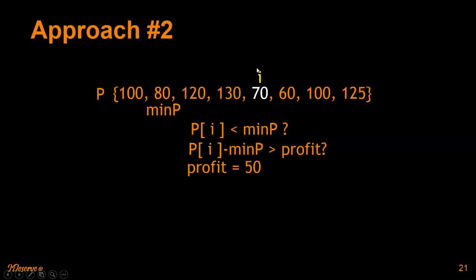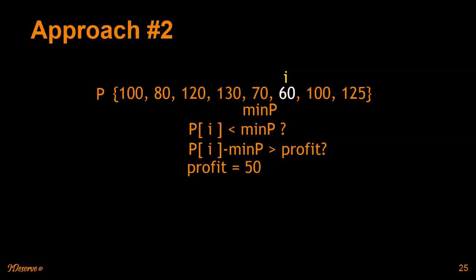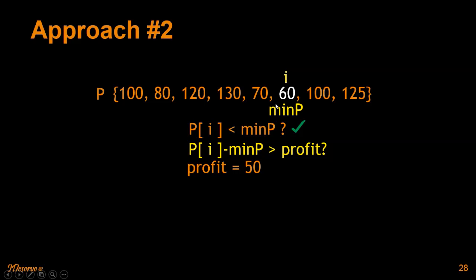The next stock price is less than the minimum buying price, so we update the minimum buying price to 70. Buying and selling at 70 gives a profit of 0, which is not greater than the previous profit of 50, so we don't update it. Moving to 60 — again, it is less than the minimum buying price, so we update to 60. The profit from buying and selling at 60 is 0, so we don't update the profit. This means we are still assuming we bought at 80 and sold at 130, giving maximum profit of 50.